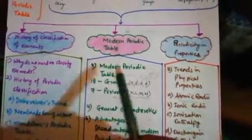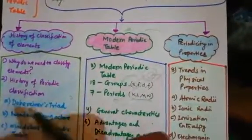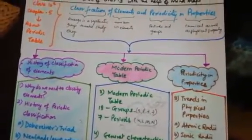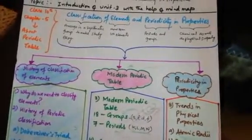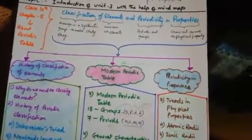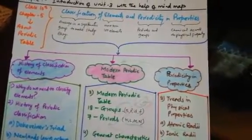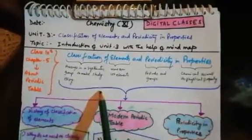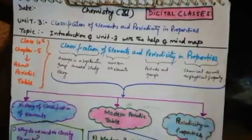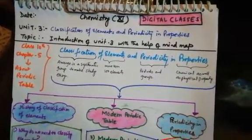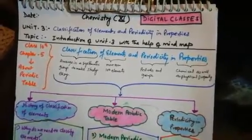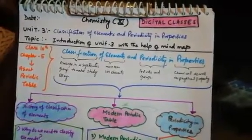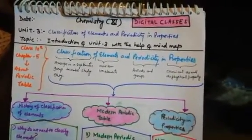The questions from this chapter are reasoning type, comparison type, and questions on the history of classification, limitations, and achievements. We will discuss all these one by one, and from tomorrow we will formally start this unit. Till then, try to make the mind map of this chapter. Hope you liked this video. Please stay home, stay safe, and keep enjoying digital classes. You can watch our videos as many times as you like — the more you watch, the clearer the concepts become. Thank you, have a nice day.